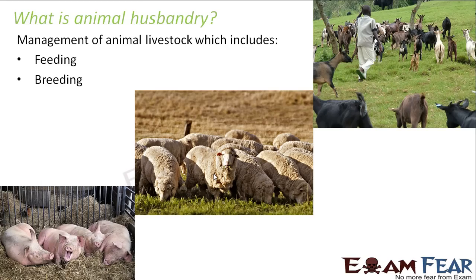The management includes feeding the animal, breeding the animal, and disease control. For example, if people are feeding on chicken meat, they need to ensure that what they are eating is not diseased. If they feed on a diseased or very weak chicken, that can affect the human's health.